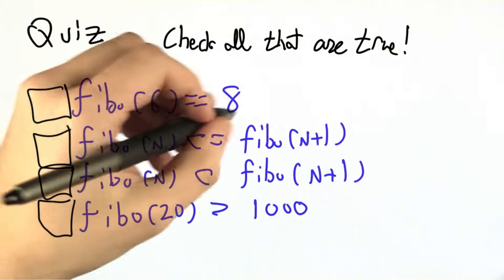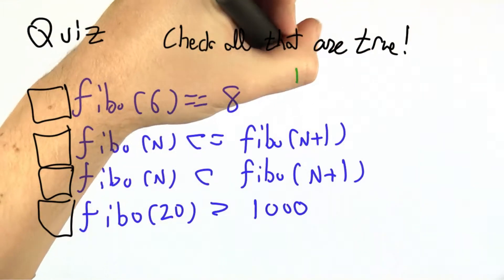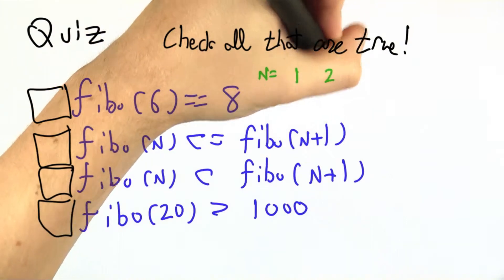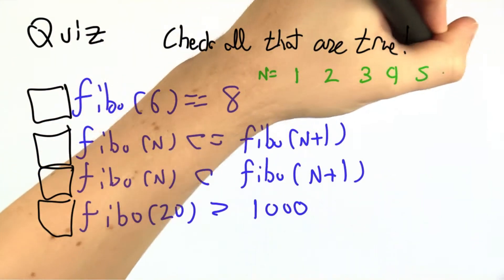Let's find out what the right answers are. Fibonacci of 6 equals 8. Well, if n is 1, 2, 3, 4, 5, 6,